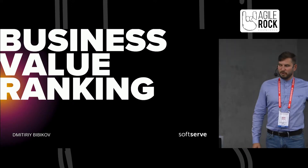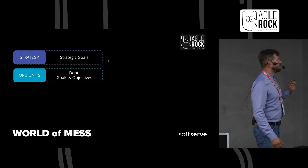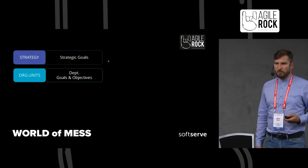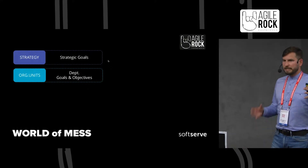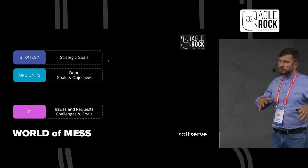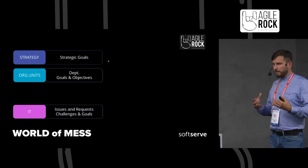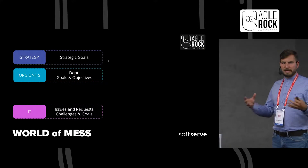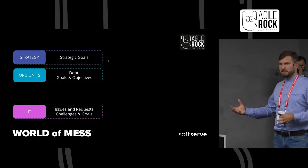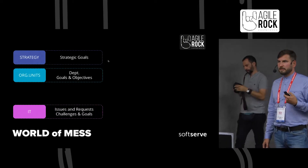So a bit of background and intro. This is the modern world as we know it. Companies, either startups or enterprises, have their strategy represented by strategic goals. The next level is organizational units — departments or affiliates — which have their own goals and objectives. I'm going to talk mostly about the case where IT and business should meet and shake hands, but this conflict and negotiation can also take place between HR and delivery, between sales and marketing, and so on.